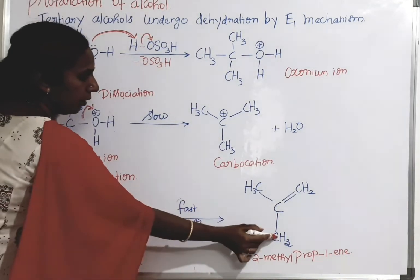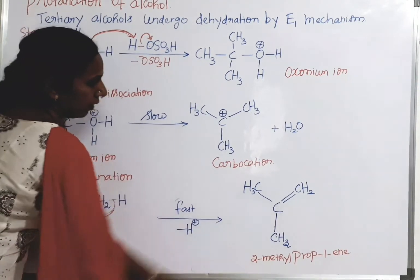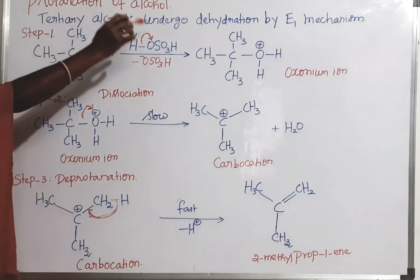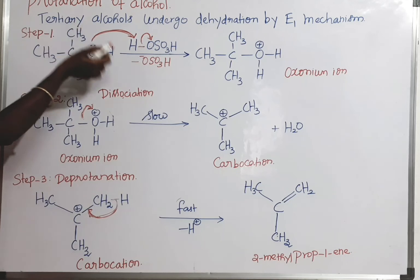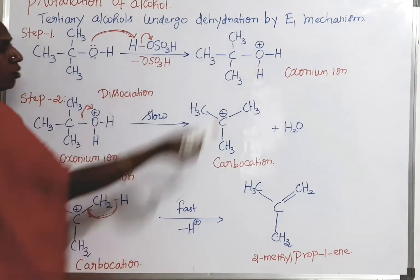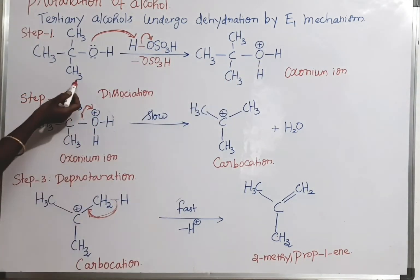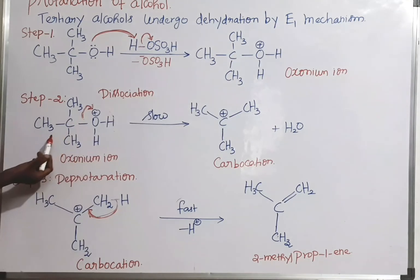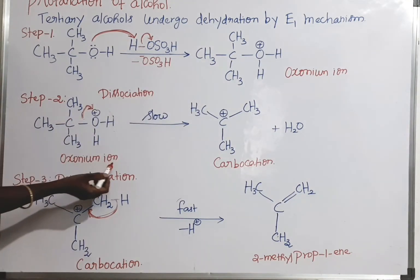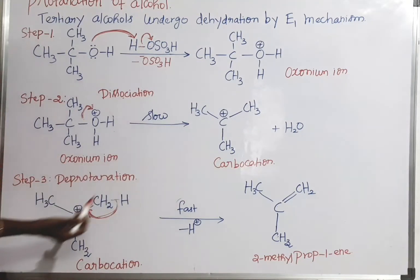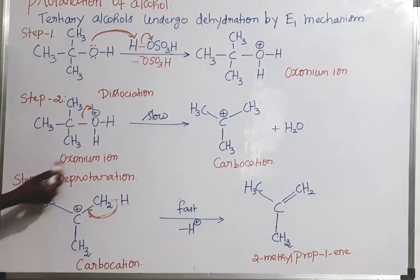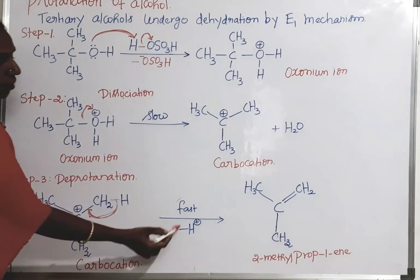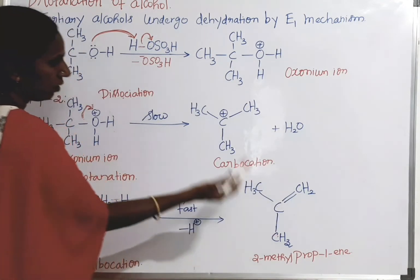That is 2-methylprop-1-ene — there is an alkene formation. So this is about the E1 mechanism: in the first step there is the formation of the oxonium ion, where the tertiary alcohol undergoes reaction with sulfuric acid. In the second step, the dissociation of the oxonium ion occurs — it is a slow process and a carbocation is formed. In the third step, deprotonation takes place — this is a fast reaction — and an alkene is formed.